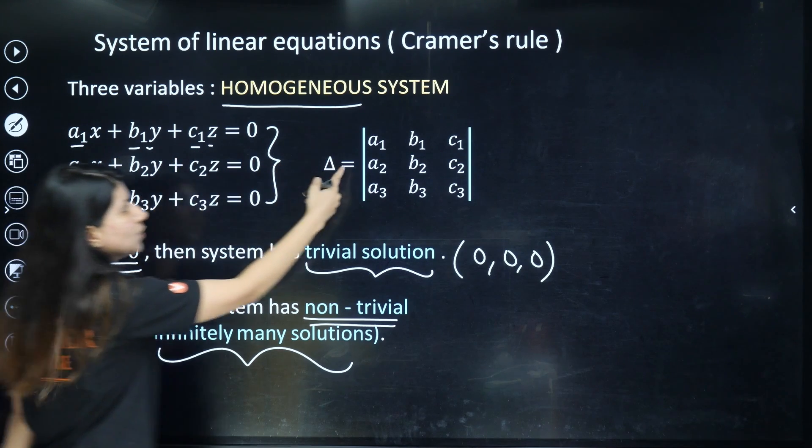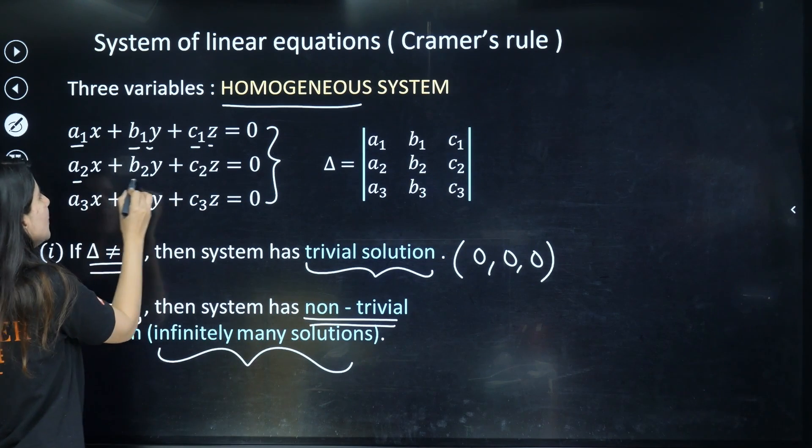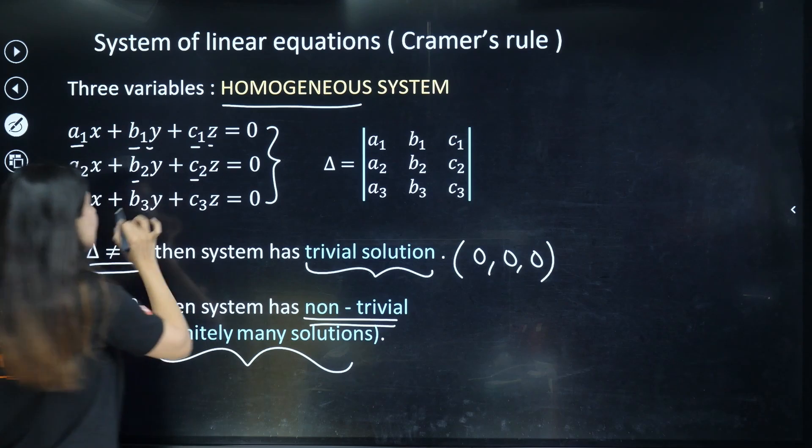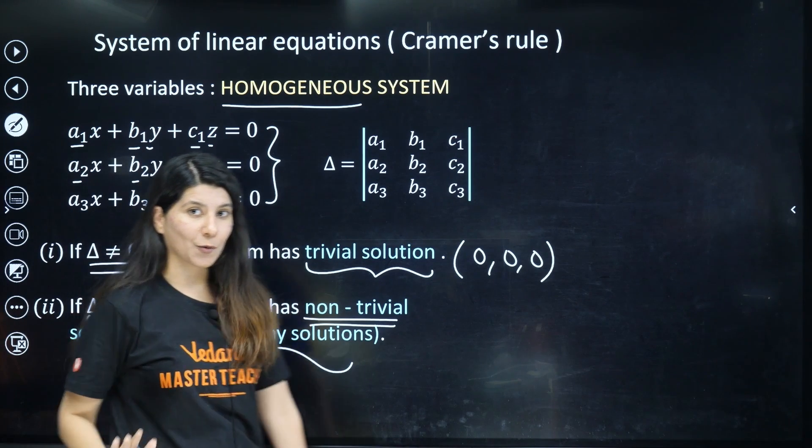So a1, b1, c1, you can see the coefficients. a2, b2, c2 will be in the second row. a3, b3, c3 will be in the third row, right?